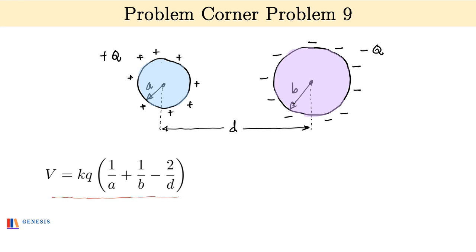Now by definition, the capacitance of a capacitor is the charge divided by the potential difference, C is equal to Q by V.